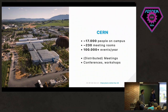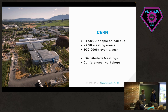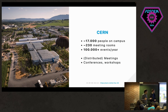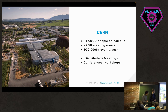Coming back to CERN: they have around 17,000 people on campus at any time, around 230 meeting rooms, organizing more than 100,000 events a year — meetings, lectures, conferences, and all sorts of things. Many of these meetings are highly distributed. The objective of Indico was to solve this problem: how do you get super large collaborations of thousands of physicists to work together in a distributed environment?